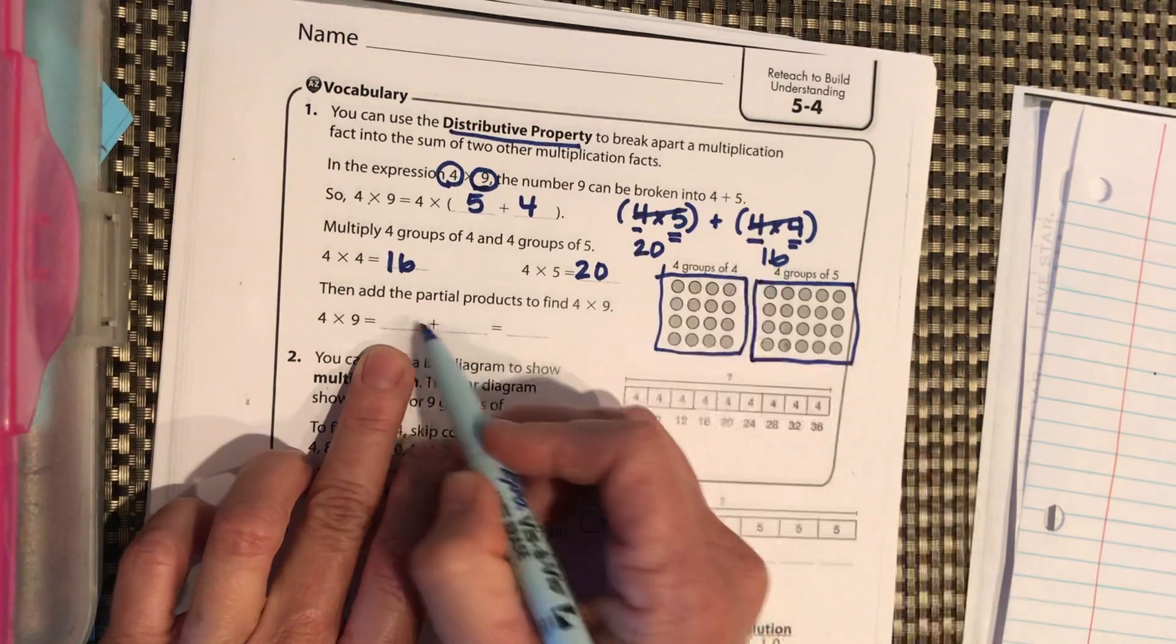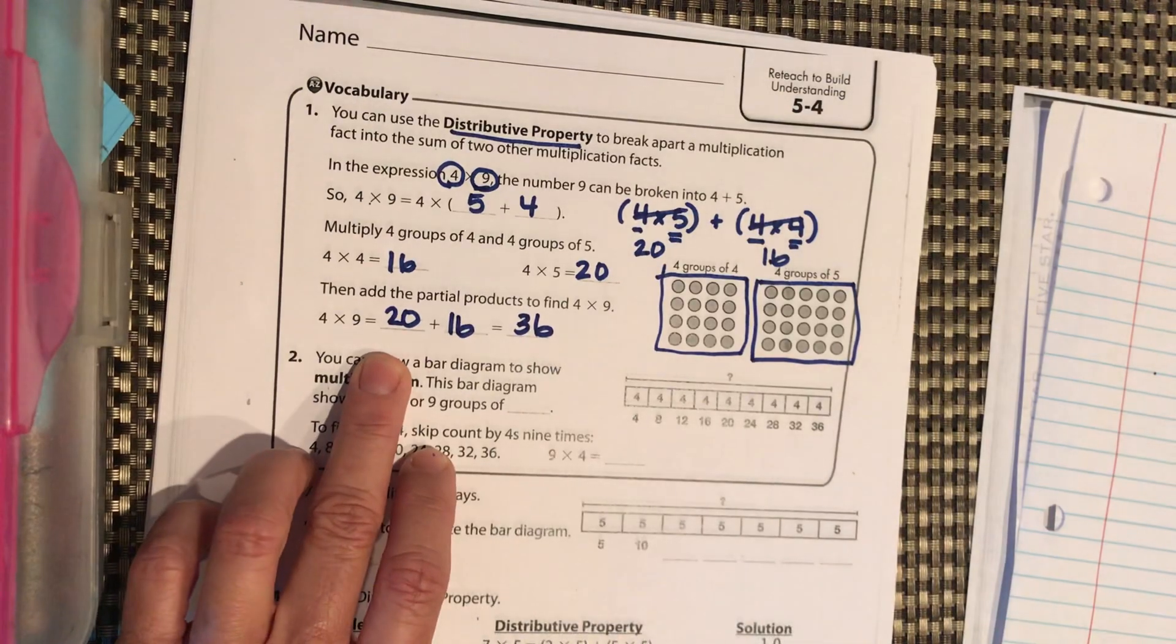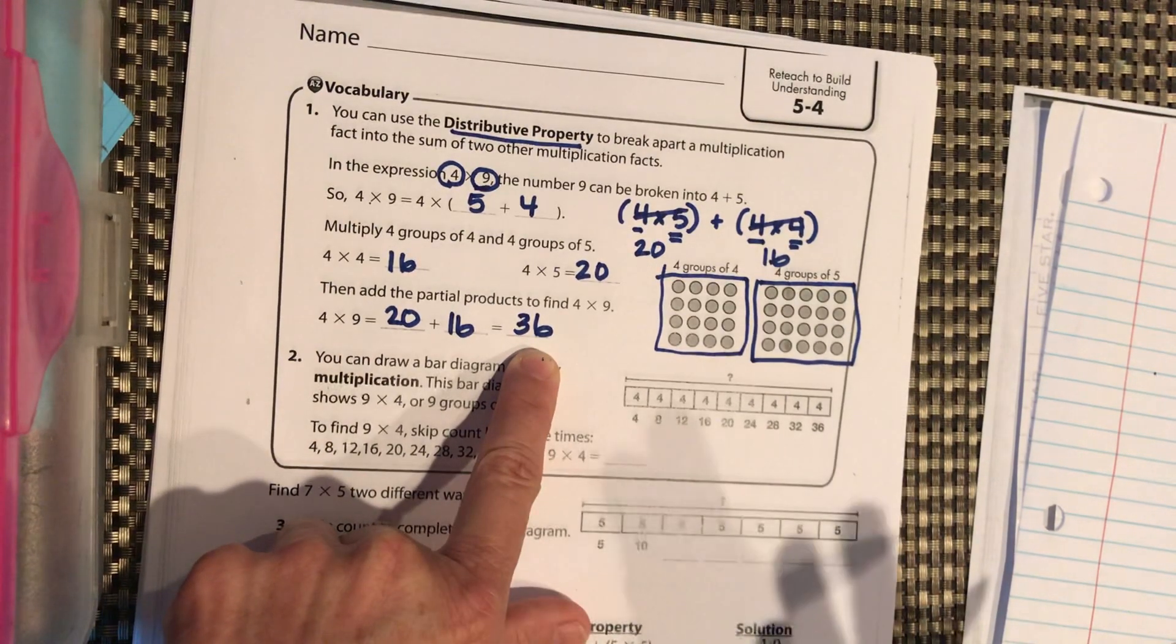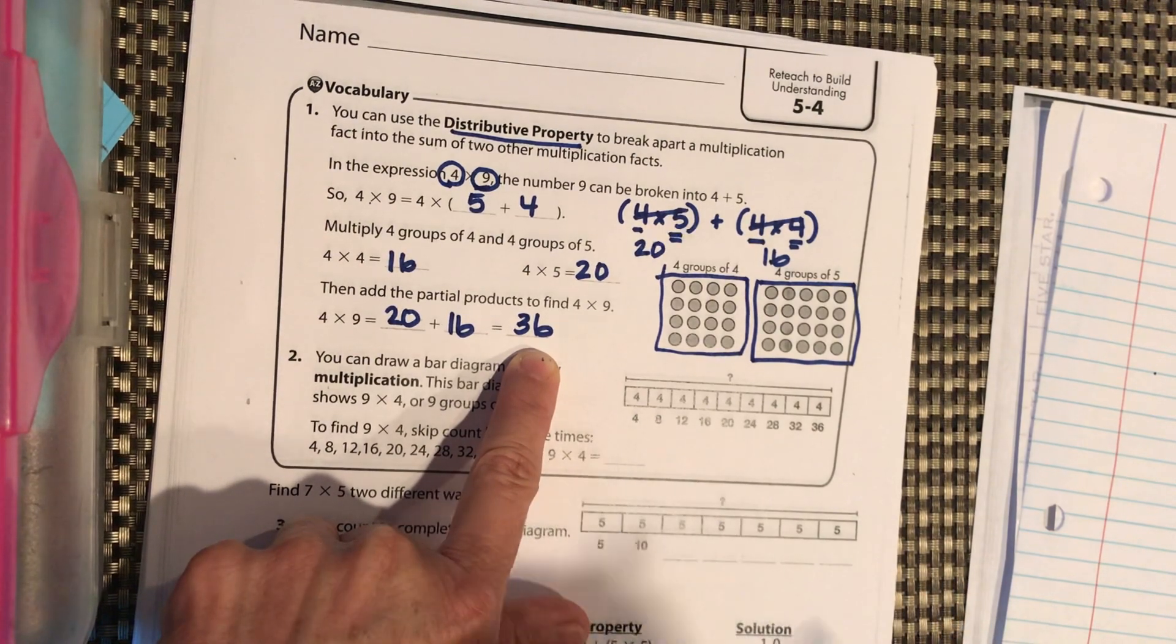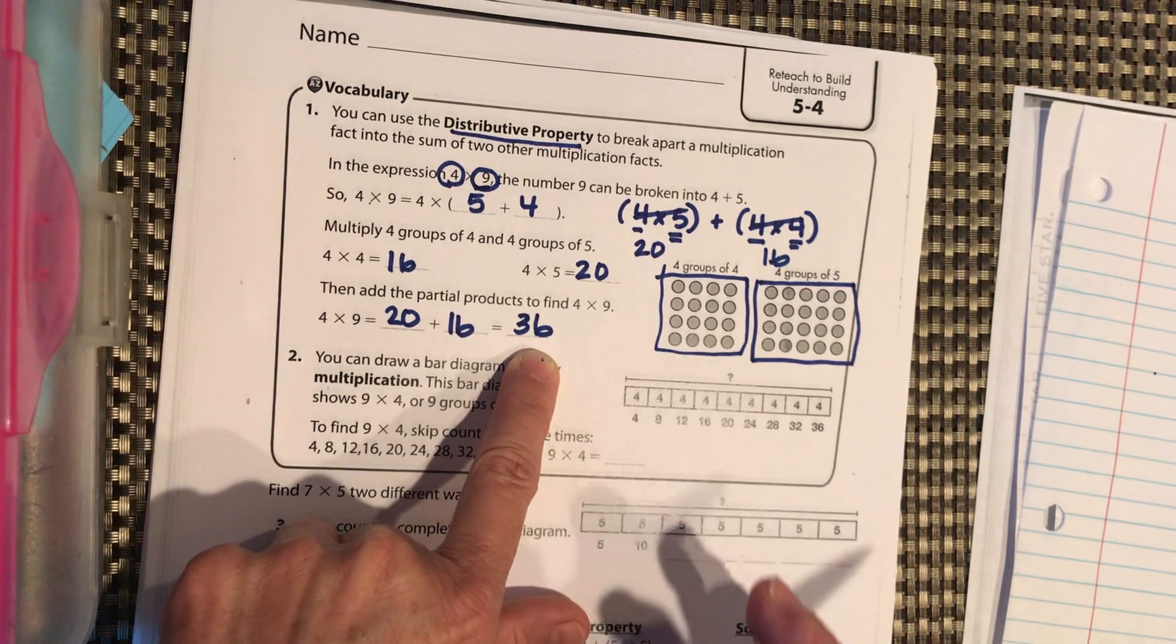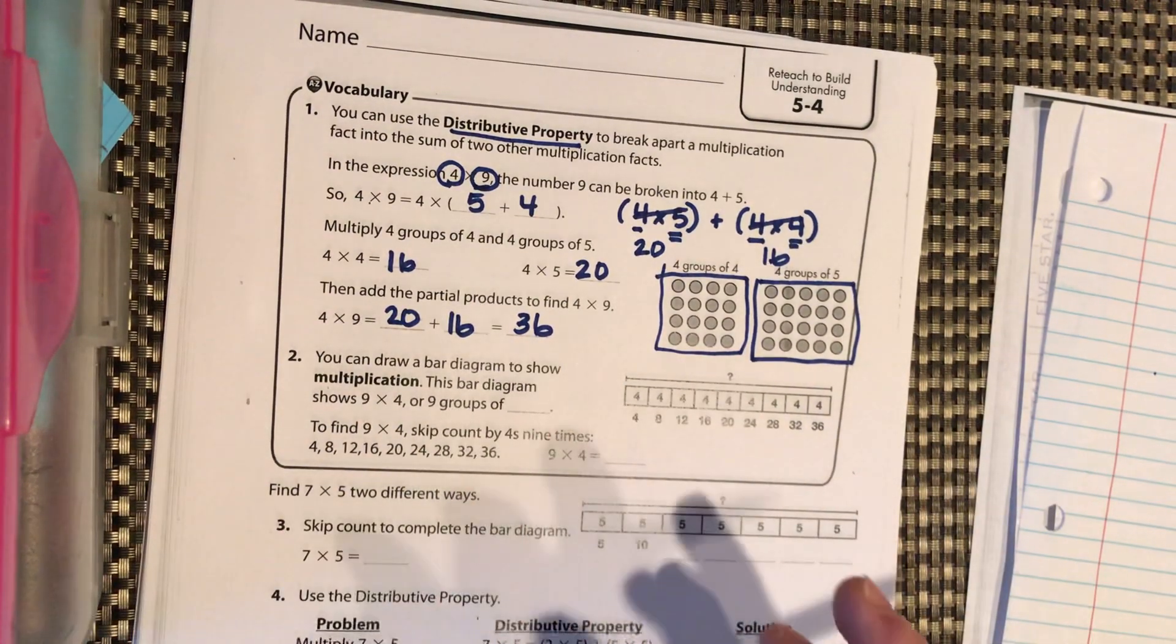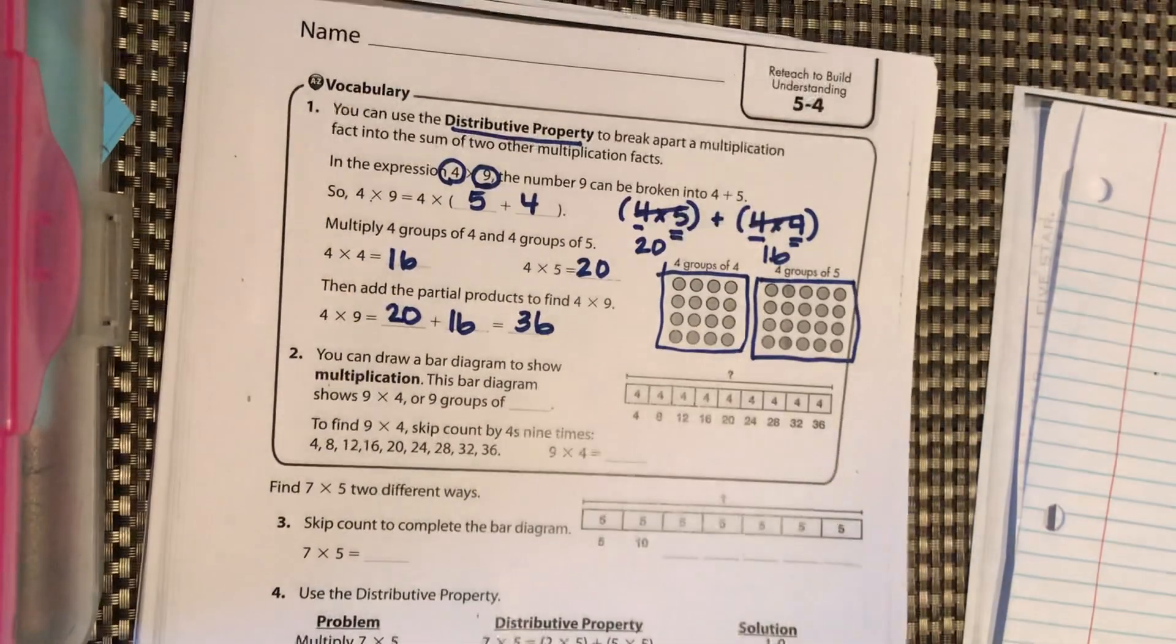Then we're going to add 20 plus 16, and that equals 36. So 4 times 9 is 36. Again, if we know the 9s trick, we just write 36 and we're done. Using the distributive property or any strategy to find a product or multiplication problem is only to be used when you don't automatically or already know it. It's kind of like looking a word up in the dictionary that you already know how to spell. Like, if you know how to spell it, write it down, be done, and move on. If you know the product, write it down and move on. But if you're stuck, these are great strategies to help you get to that answer.